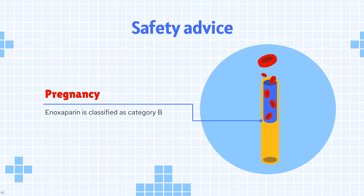Safety Advice: Enoxaparin is an FDA Pregnancy Category B drug, which means enoxaparin is not expected to cause harm to an unborn baby when used during pregnancy.